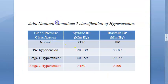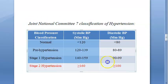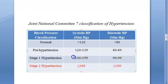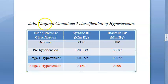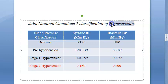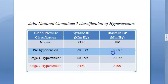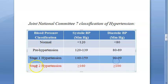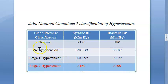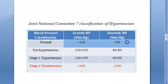Now let us classify the hypertension. This patient has a systolic of 160 and diastolic of 98. The classification of hypertension: you have Normal, Pre-hypertension, Stage 1, and Stage 2 hypertension. Normal is less than 120 by 80 — that is the standard.